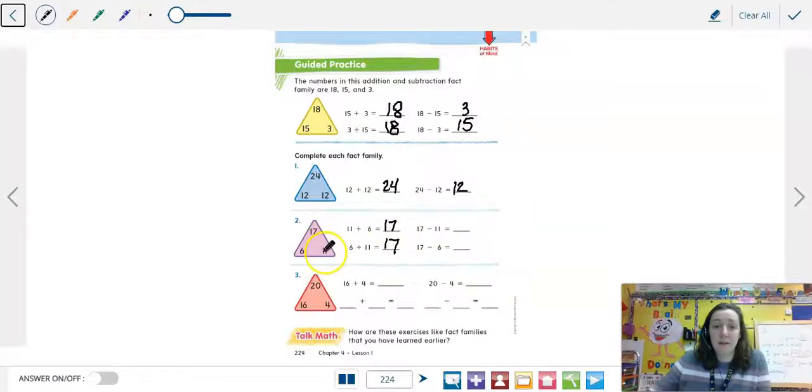Then 17 minus 11 equals the other part, which is 6. And then 17 minus 6 is of course 11 because, again, the part.